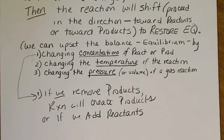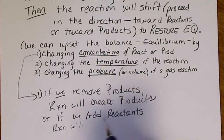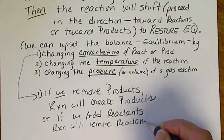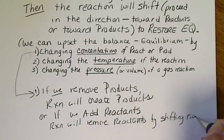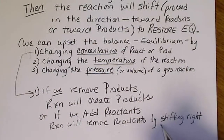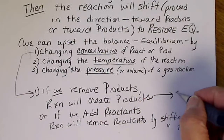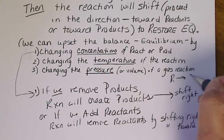Whatever we do to the reaction, the reaction is going to proceed so that it undoes what we did. So if we add reactants, the reaction will remove reactants — but it can only remove reactants by creating more products out of them. This will be a shift to the right, or shifting toward products. Both removing products and adding reactants give us the same shift to the right, because reactants are on the left and products are on the right.